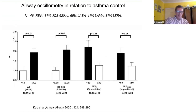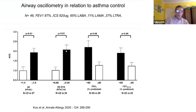Here we have the ACQ and the AX using a cutoff of less than one and greater than one. The difference in ACQ exceeded the minimum important difference of 0.5 — in fact it's nearly a one unit difference, which is big. Using R5-19 rather than R5-20, which the TremoFlo generates — and R5R19 and R5R20 are interchangeable — you can again see nearly a one point difference in ACQ.